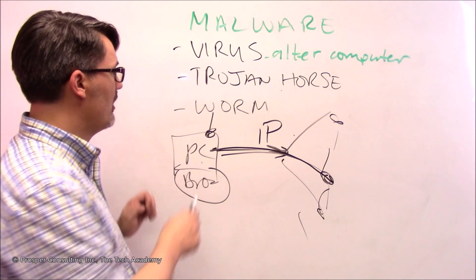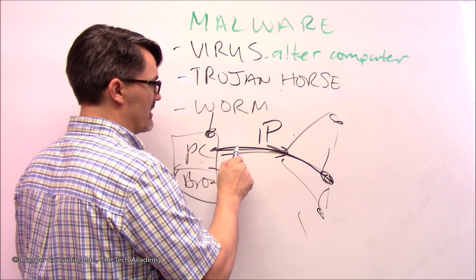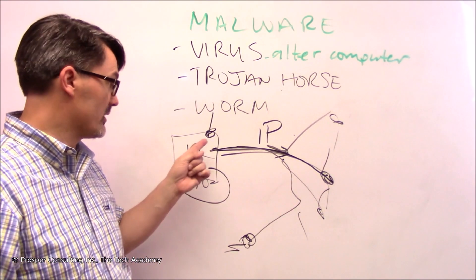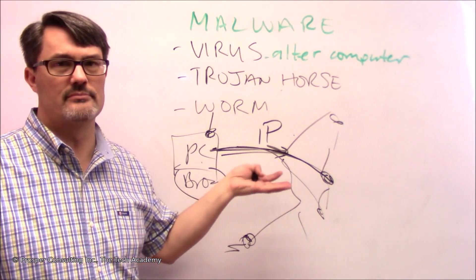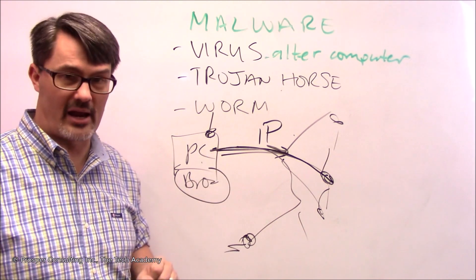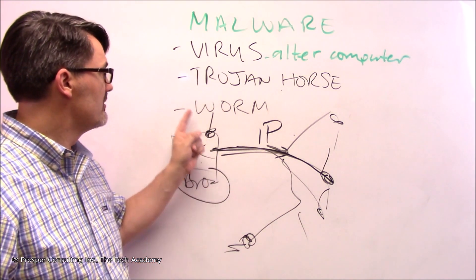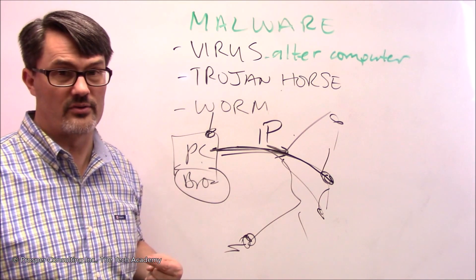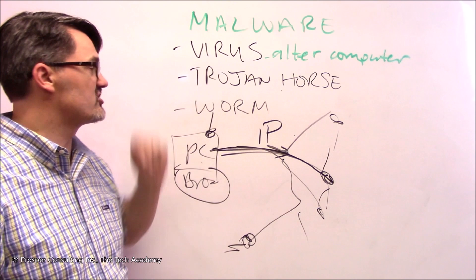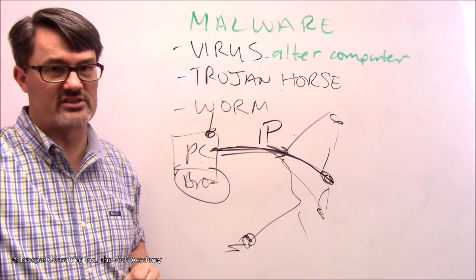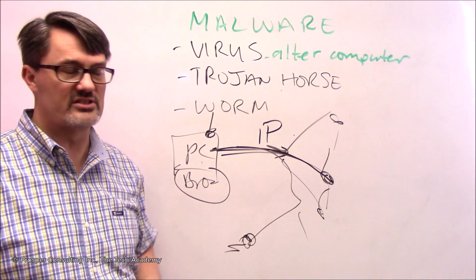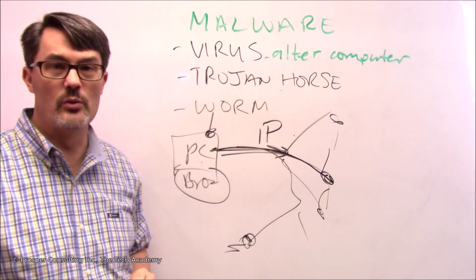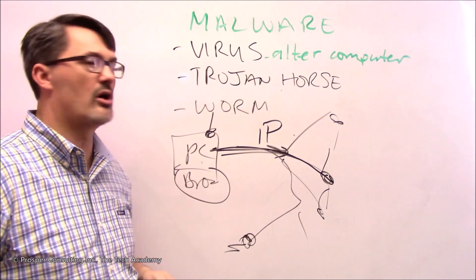Now what's it going to do once it's installed on your computer? Again, sky's the limit - whatever a computer program can do. But the essential difference is: a virus does require some action on your part, whether you know you've done it or not, to get that thing installed onto your computer. Once installed, it executes and does whatever malware function it's going to do. The worm, on the other hand - you don't even know it's coming. You didn't do anything. It found a connection into your computer and installed itself.